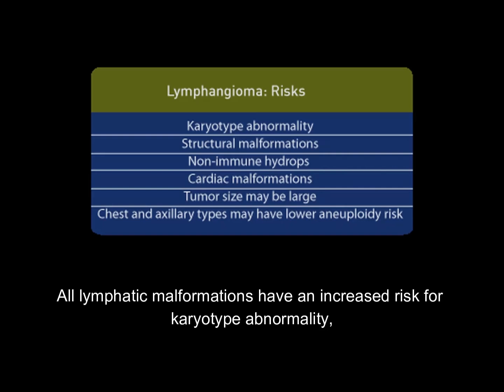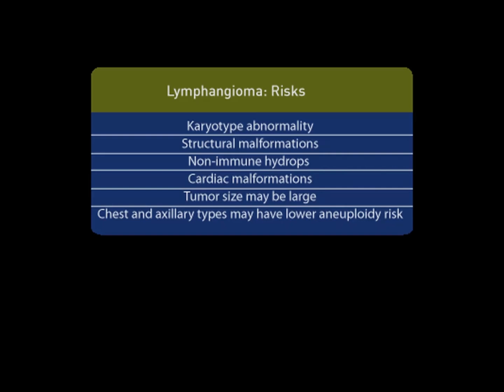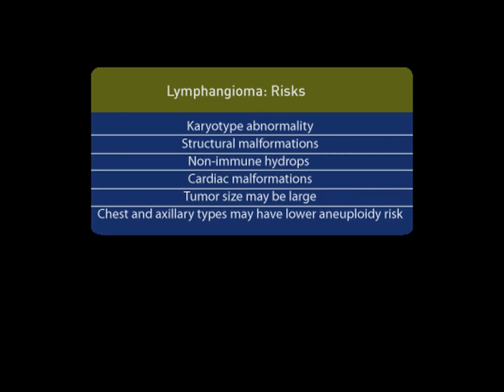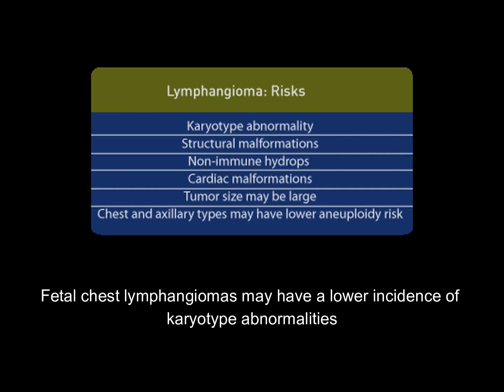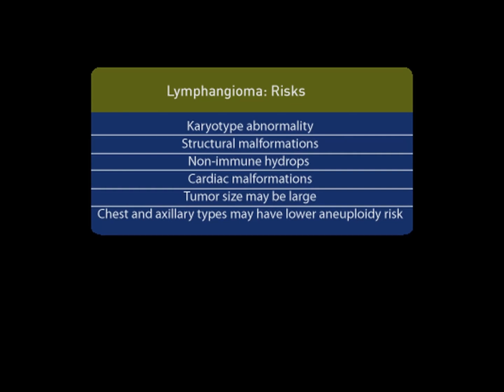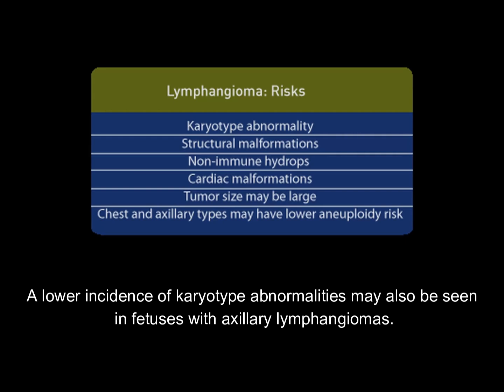All lymphatic malformations have an increased risk for karyotype abnormality, structural malformations, nonimmune hydrops, and cardiac malformations. Fetal chest lymphangiomas may have a lower incidence of karyotype abnormalities and structural malformations compared to cystic hygromas detected early in pregnancy. A lower incidence of karyotype abnormalities may also be seen in fetuses with axillary lymphangiomas.